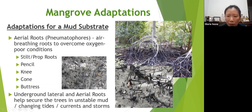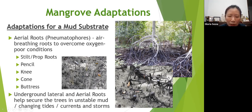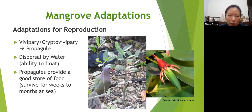The underground roots obviously also secure the tree in very unstable mud. Sometimes there are storms, and the mangrove trees don't usually collapse because they are very stable — though of course if it's really severe they will. They are also able to withstand currents.